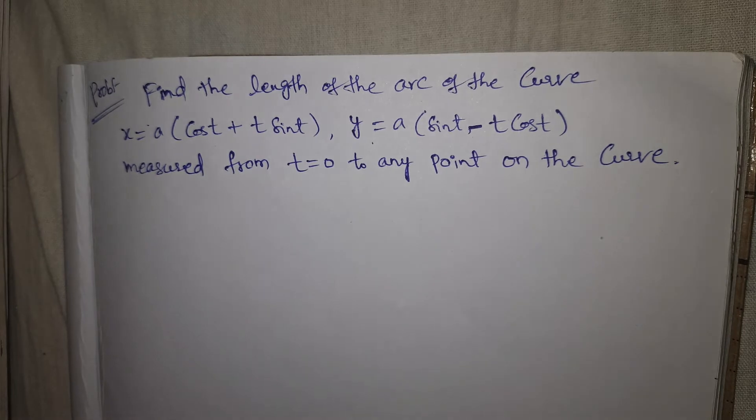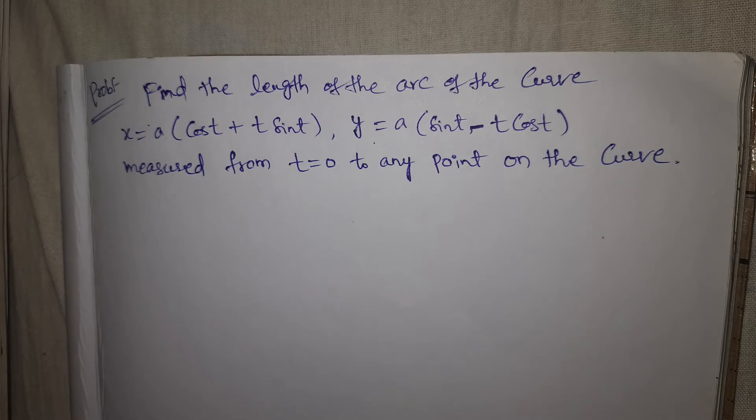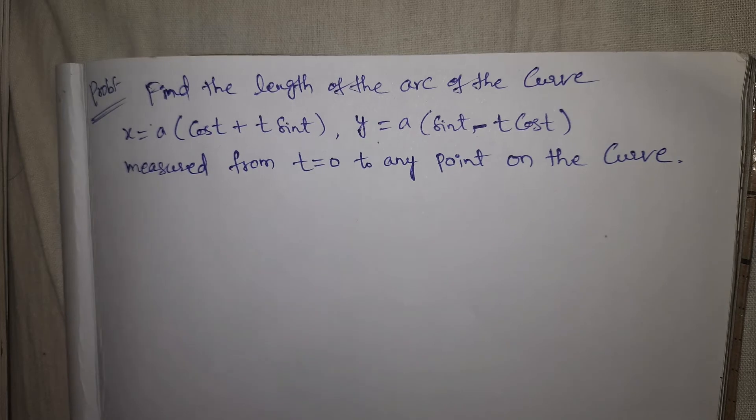Welcome to Rajesh Lekaloo. Today our topic is length of curve, subtopic is the parametric form. Find the length of the arc of the curve x = a(cos t + t sin t), y = a(sin t - t cos t) measured from t = 0 to any point on the curve.